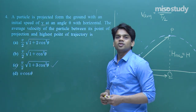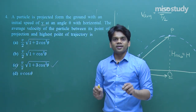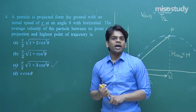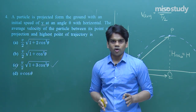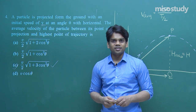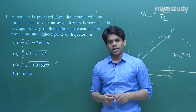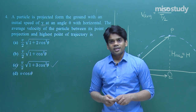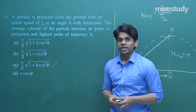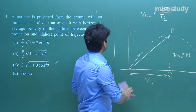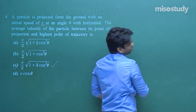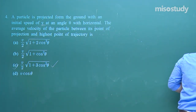This question required remembering the three key formulae for projectile motion: range, maximum height, and time of flight. Also remember the equation of trajectory: y = x tanθ − gx²/(2U² cos²θ). Keep all four equations memorized so you can solve directly in the examination without re-deriving them. Let us proceed to the next question.